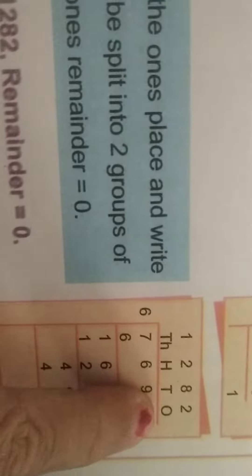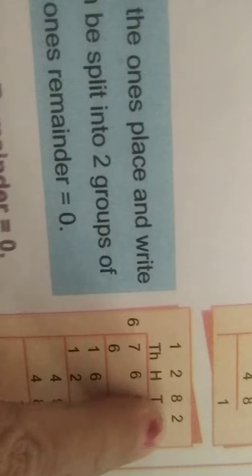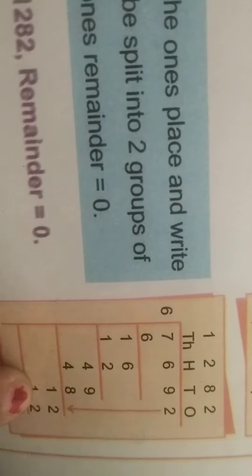Bring down the 2 from the ones place next to 1. 12 ones can be split into 2 groups of 6 ones. 12 divided by 6 equals 2 ones with remainder 0. 6 times 2 is 12, remainder 0.